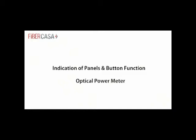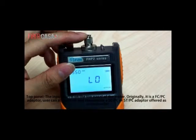Indication of panel and button function - Optical Power Meter. Top panel. The input port is on the top panel of the meter. Originally it is a FC-PC adapter. Users can screw it off and reassemble a SC-PC or ST-PC adapter offered as an accessory.